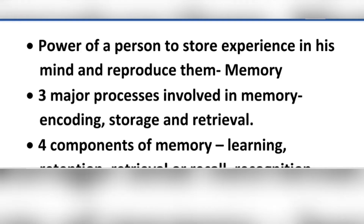Encoded information is stored in storage. Information is stored in three stages: sensory memory, short-term memory, and long-term memory. These are the three stages of storage, and this corresponds to the detailed types of memory.